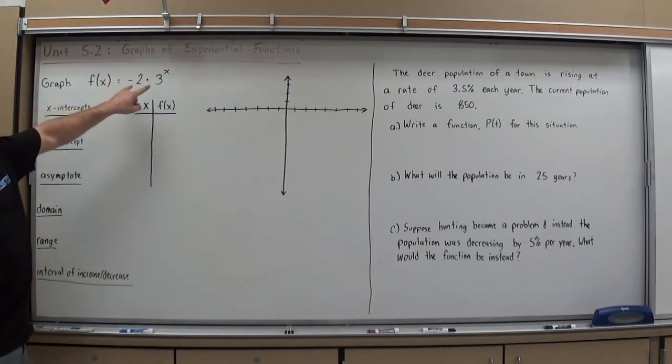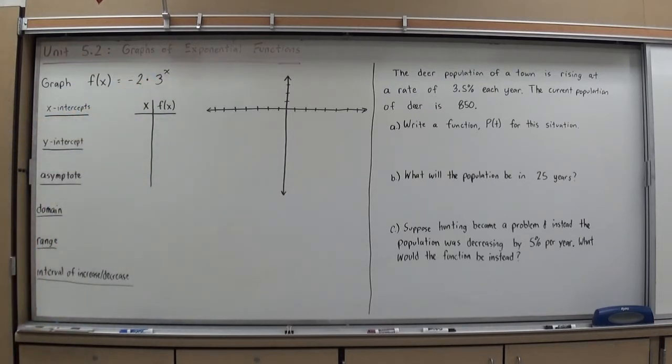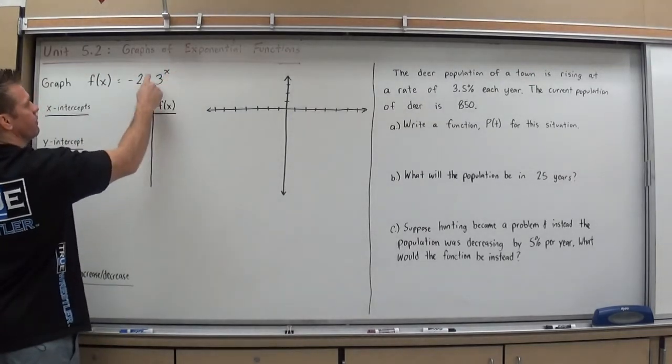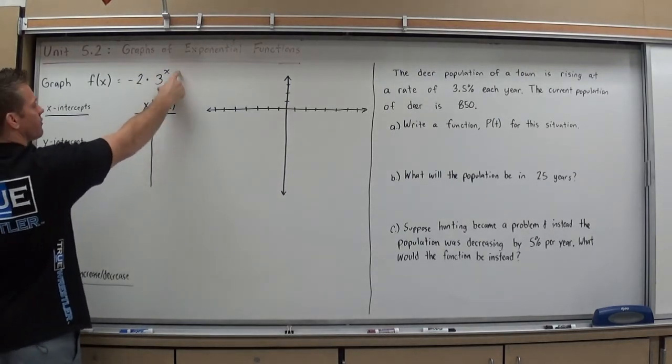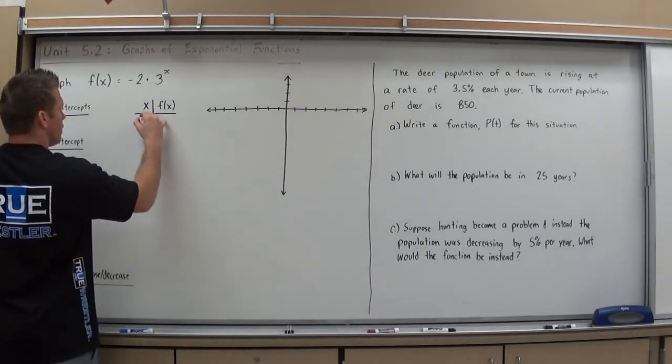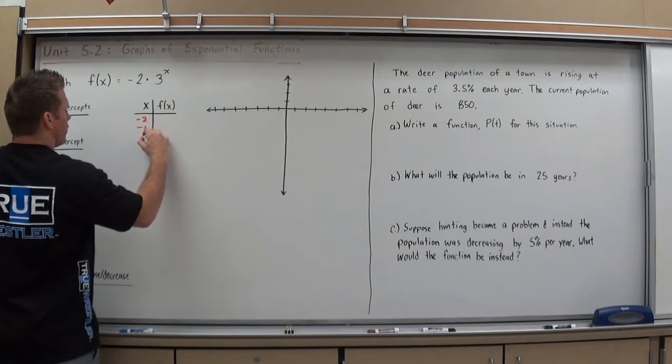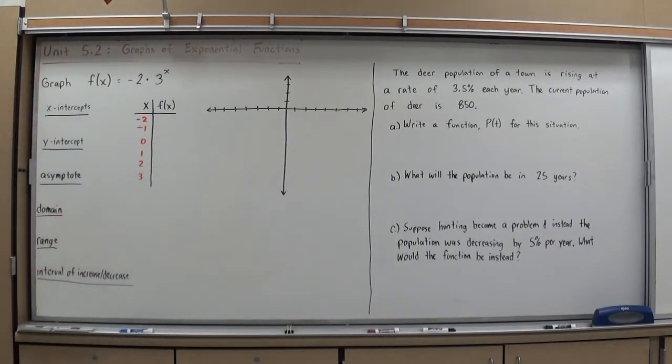So we're going to try graphing a slightly more complicated exponential function of -2 times 3 to the x power. To do that, I would suggest making a table at this point. It's probably going to be the easiest way. Now, you're going to need to be decent at exponents and making sure you follow order of operations. Always do the exponents first, then times it by whatever you have in front in that A position, negative 2. So in my table, I'm going to do -2, -1, 0, 1, 2, 3, and we'll see if we need to go farther than that.